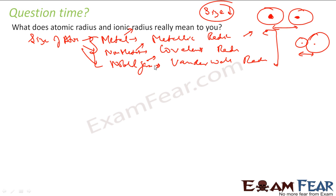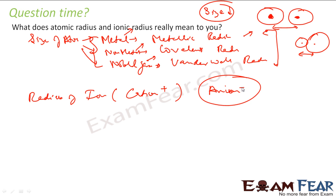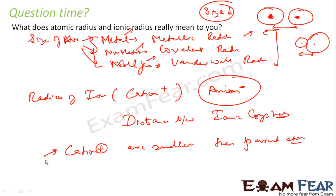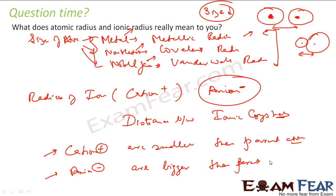Ionic radius is the radius of an ion — it can be a cation with a positive charge or an anion with a negative charge. It is determined from the distance between ions in ionic crystals. Cations are smaller than the parent atom because they have fewer electrons, so the nucleus attracts the remaining electrons with more force and they are pulled in. Anions are bigger than the parent atom because there are more electrons and the same number of protons finds it difficult to control the extra electrons, so the radius expands.